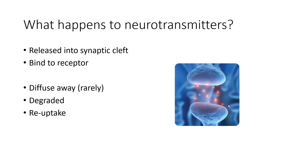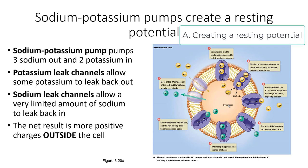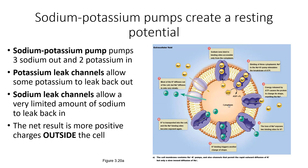We talked a bit about potential, but let's think about the different types of potential and why these neurons have charges. There is something called a resting potential — the charge across the neuron when it is at rest. This resting potential is also true for many other cells, including muscle cells.